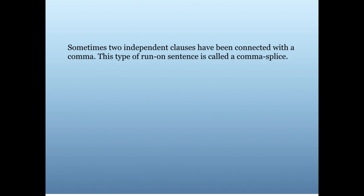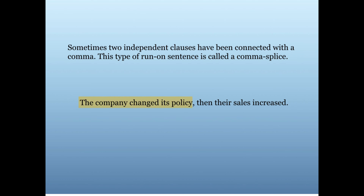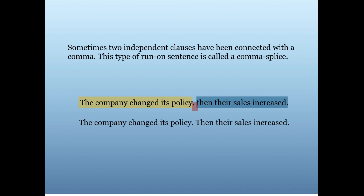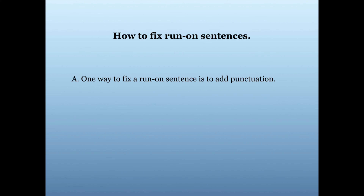Sometimes students connect two independent clauses with a comma. This type of run-on sentence is called a comma splice. Here's an example: 'The company changed its policy, then their sales increased.' There are two independent clauses — 'the company changed its policy' and 'then their sales increased' — connected by a comma. We cannot do this in English; the two sentences should be separated.